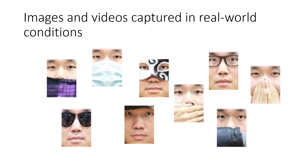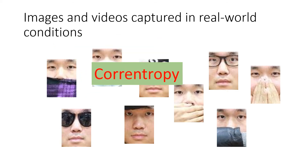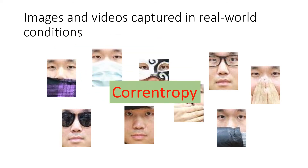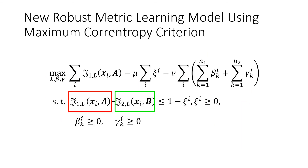Fortunately, the concept of co-entropy was proposed to process non-Gaussian noise and impulsive noise, and achieved great success. We introduce the maximum co-entropy criterion into the metric learning model.